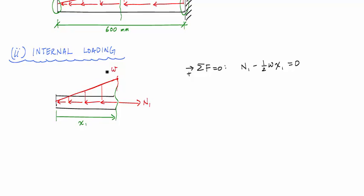You could try to create a function using y equals mx plus b and try to come up with a function for w, but if I continue this all the way to the end, to the fixed point here, the magnitude of this load is 30 kilonewtons per meter, and that entire length from here to here is 600 millimeters or 0.6 meters.